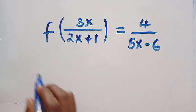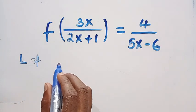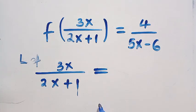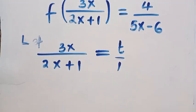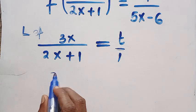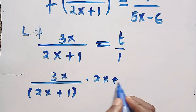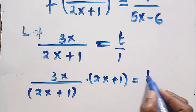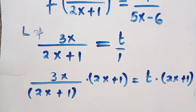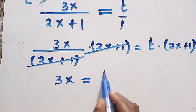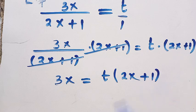To obtain f of x, suppose we let 3x over 2x plus 1 equal t. We want to make x the subject of the formula. We multiply both sides by 2x plus 1: 3x divided by 2x plus 1, multiplied by 2x plus 1, equals t multiplied by 2x plus 1. The 2x plus 1 cancels, giving us 3x equals t times the bracket 2x plus 1.